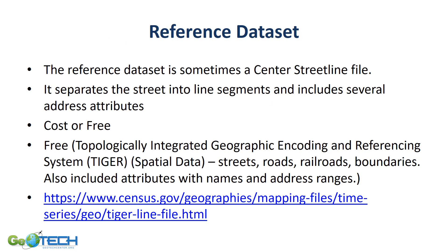The reference data set for geocoding a street file starts off with a center street file. This is a street file that has line segments. The line segments are divided by intersecting streets, barriers, and political boundaries. A lot of these center street line files are free, or sometimes certain governmental agencies will ask you to pay for them.